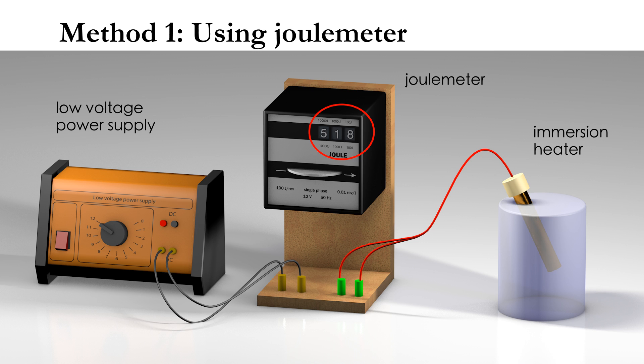The number shown here is 518. Note that after the power supply is turned on, the disk will rotate. Each complete rotation will cause the number to increase by 1 and this corresponds to 100 joules. Therefore, we have to multiply the number by 100 to give the energy reading.